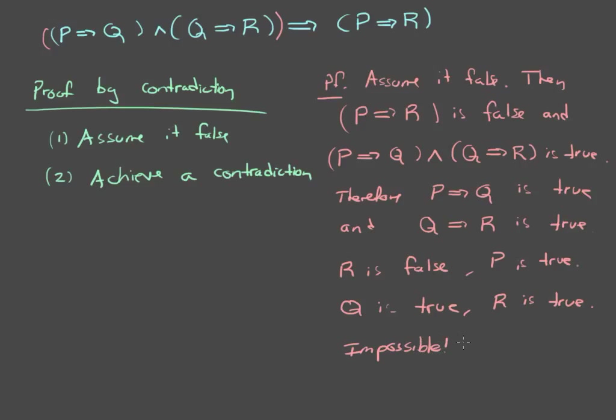Therefore, by contradiction, it must be true. And that is the end of the proof. That's how contradiction works. We assumed that it was false, and we reached a possibility where R was false and R was also true. This is impossible. Therefore, our assumption must have been incorrect, and therefore this statement is true.